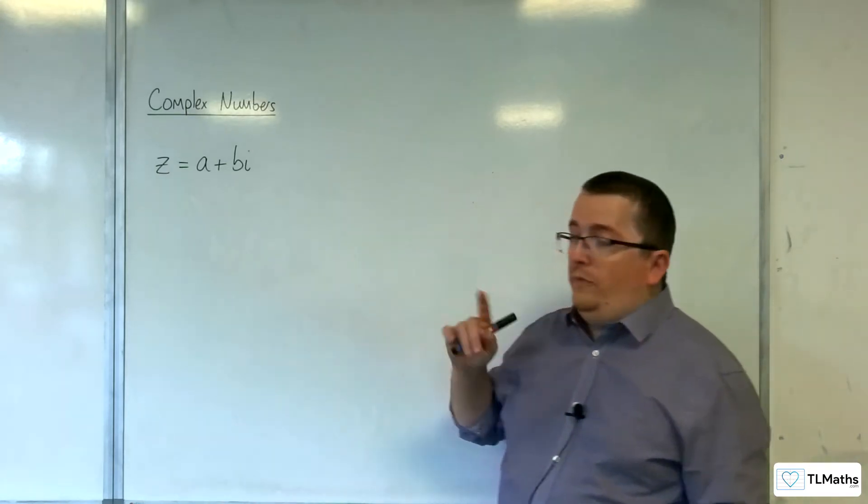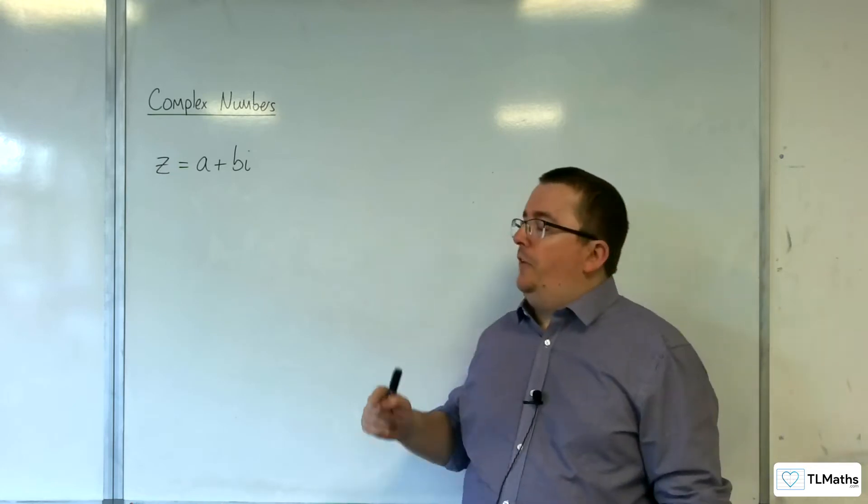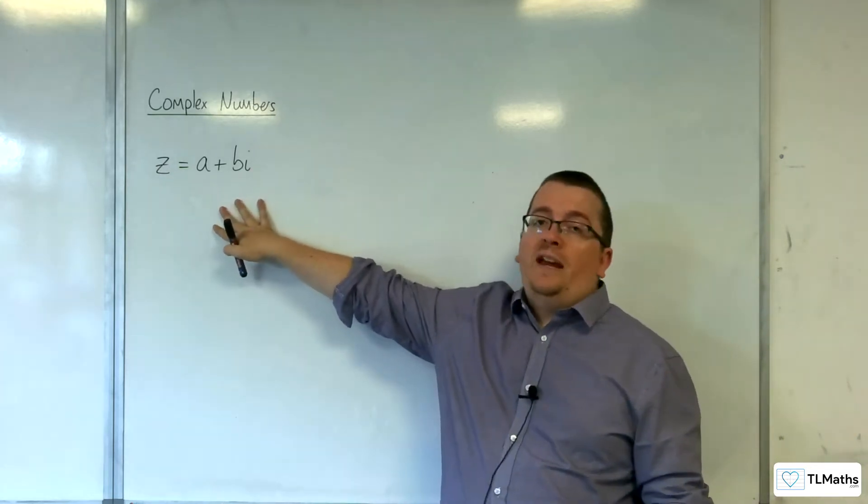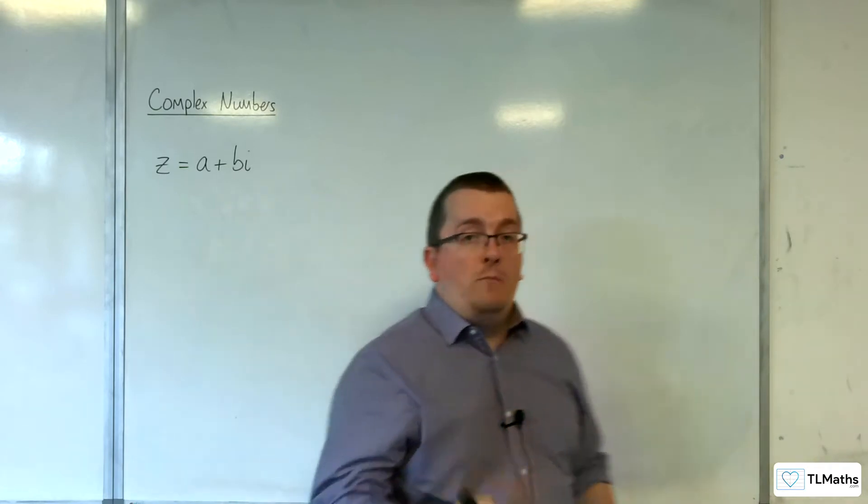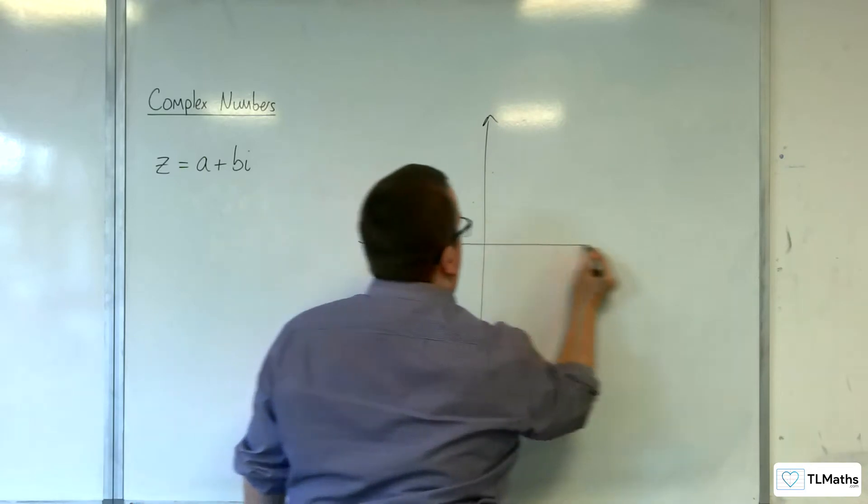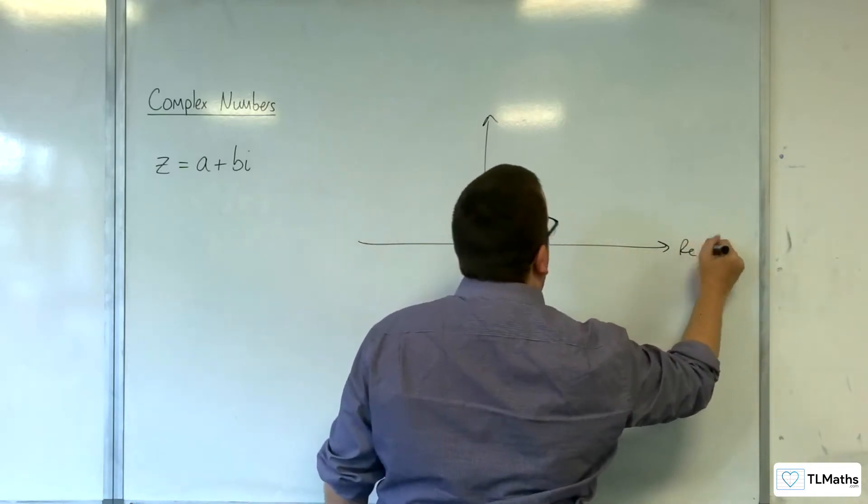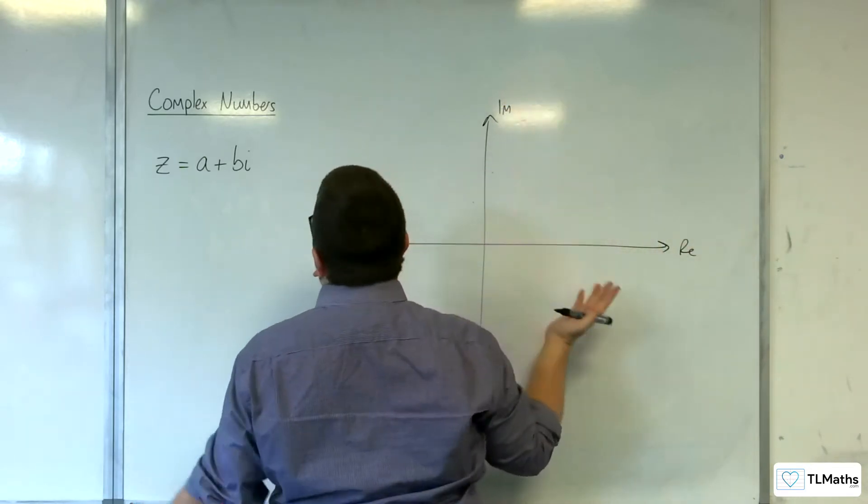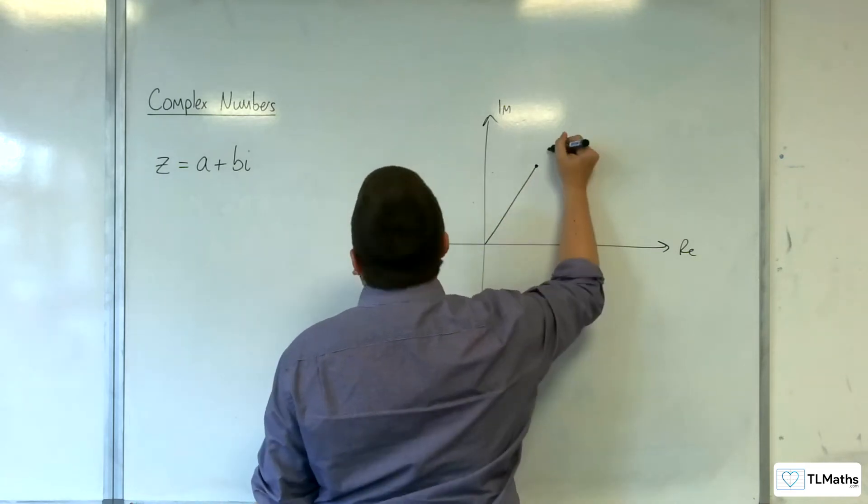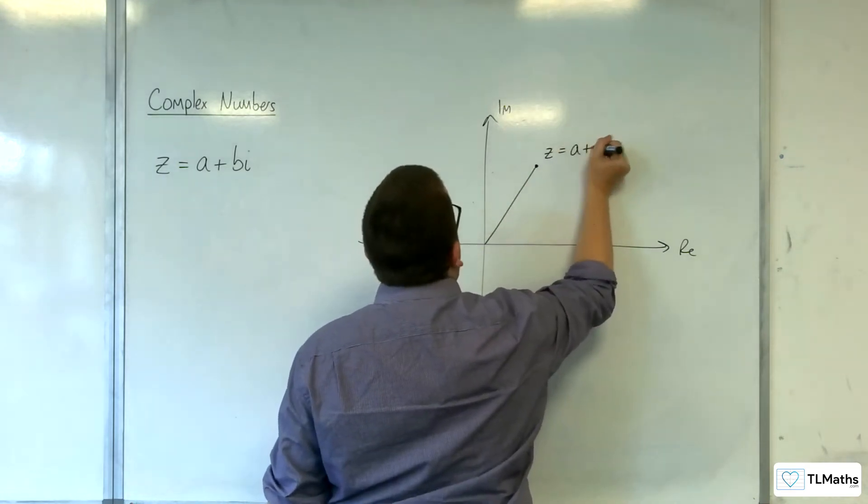What we've seen so far is this concept of having a complex number, so let's say Z equals A plus Bi, and we can then represent that on an Argand diagram. So real axis, imaginary axis, let's say A and B are both positive, and here's our point, Z equals A plus Bi.